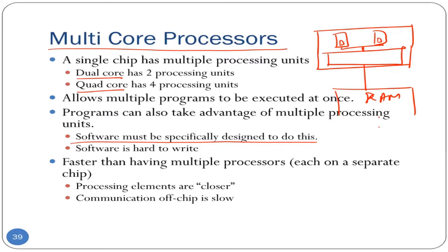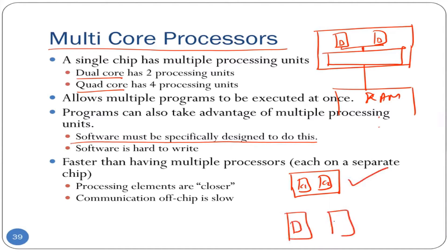Finally, before moving on, I would like to quickly mention that a multi-core design is faster than having multiple processors on separate chips. For example, a dual core architecture with two cores on a single chip is faster than having two processors on two separate chips connected by an external bus. The main reason is that when two cores are integrated on the same chip, they are so closely placed that the communication latency between them is extremely small, making communication faster. Additionally, on-chip buses typically have very high bandwidth, so communication is faster for that reason as well.